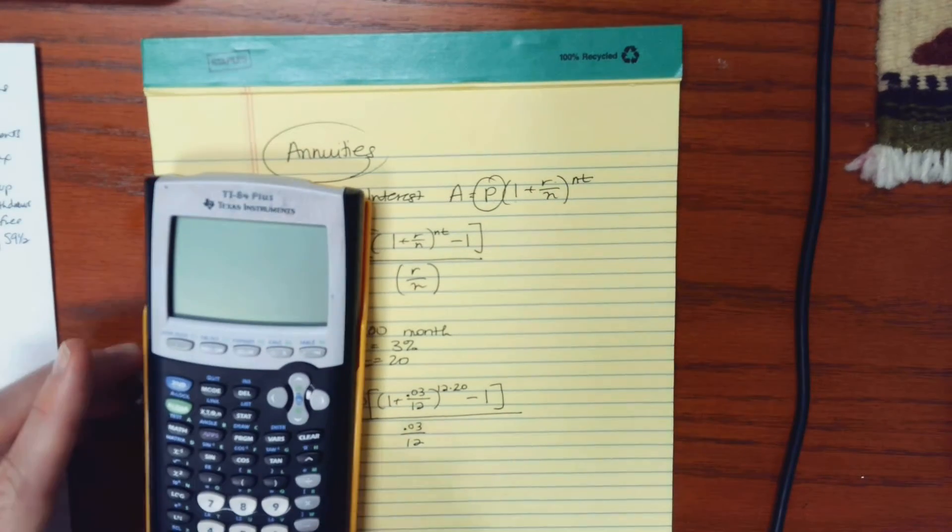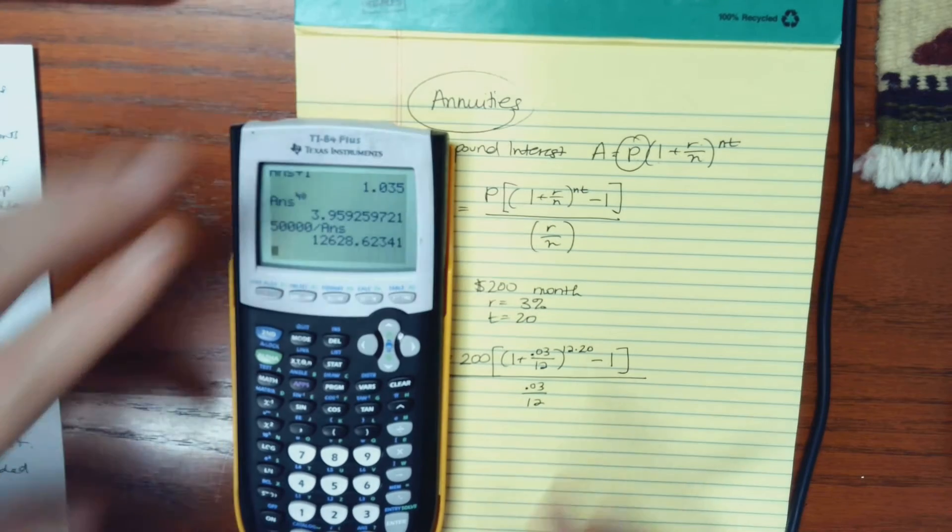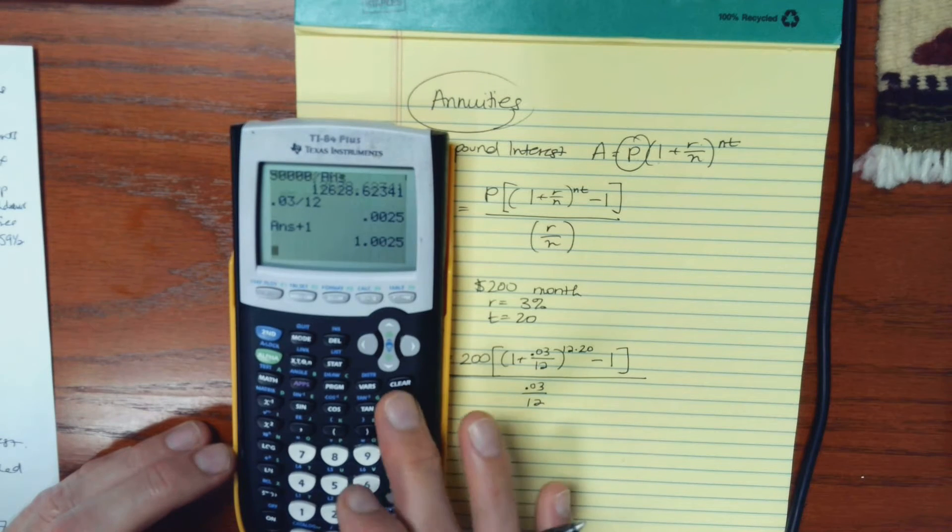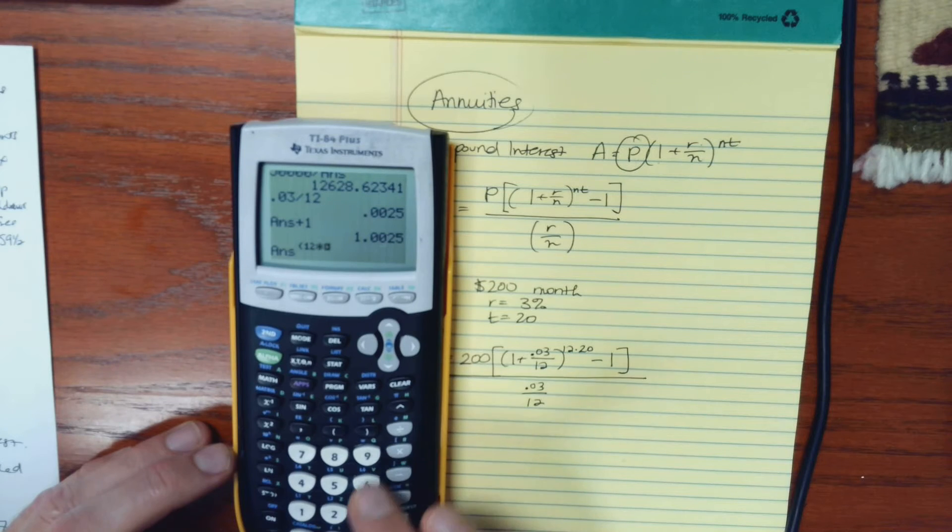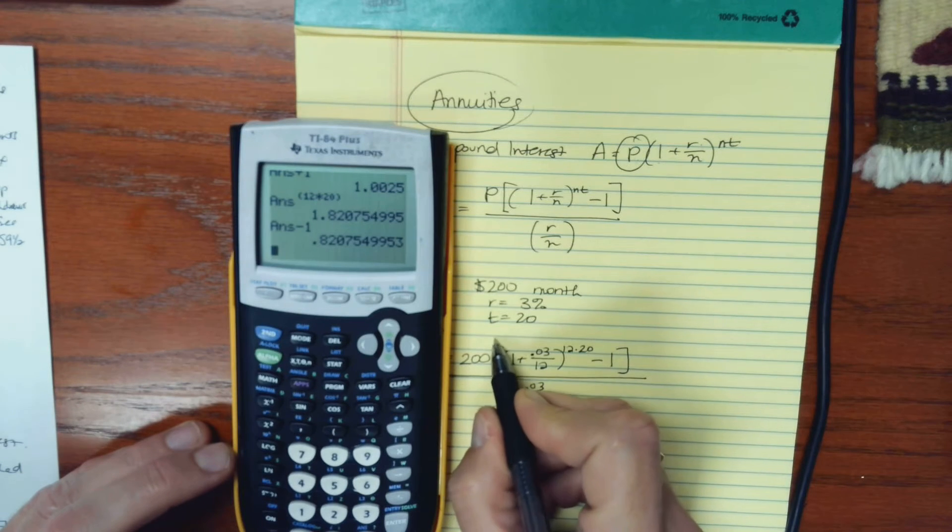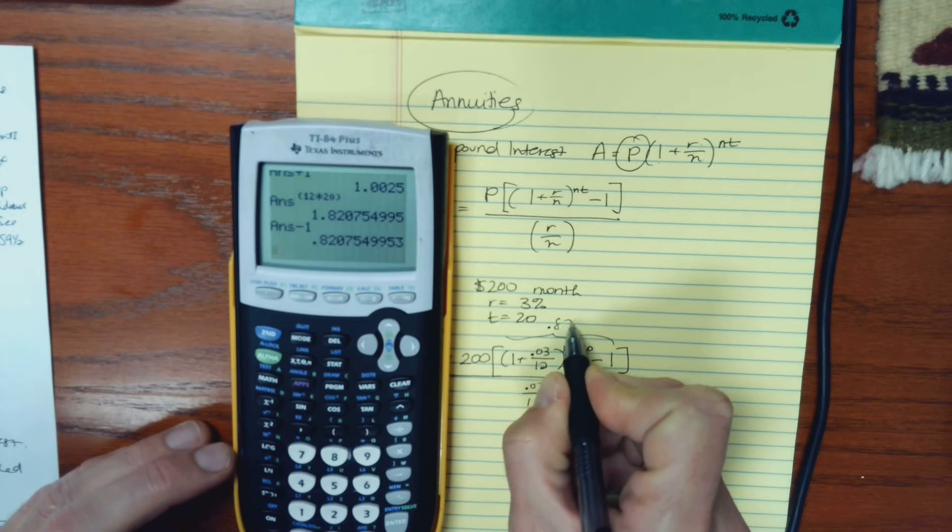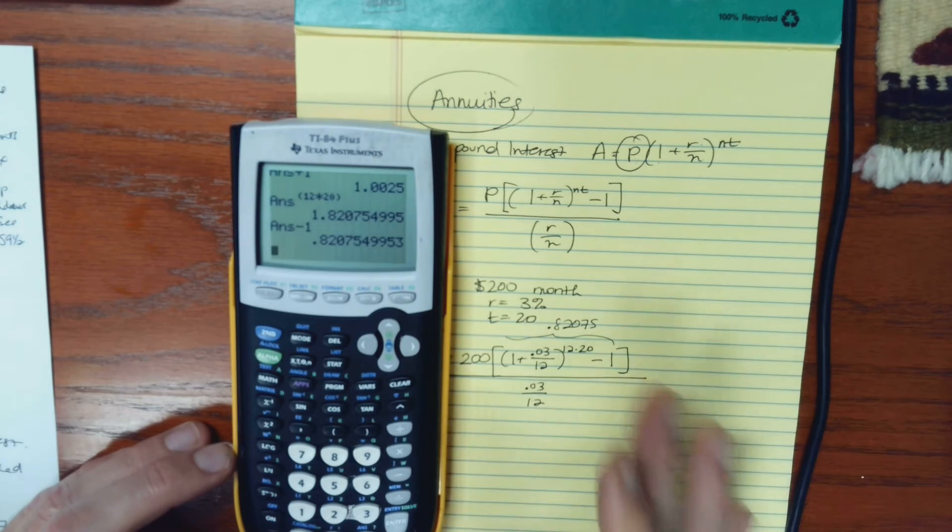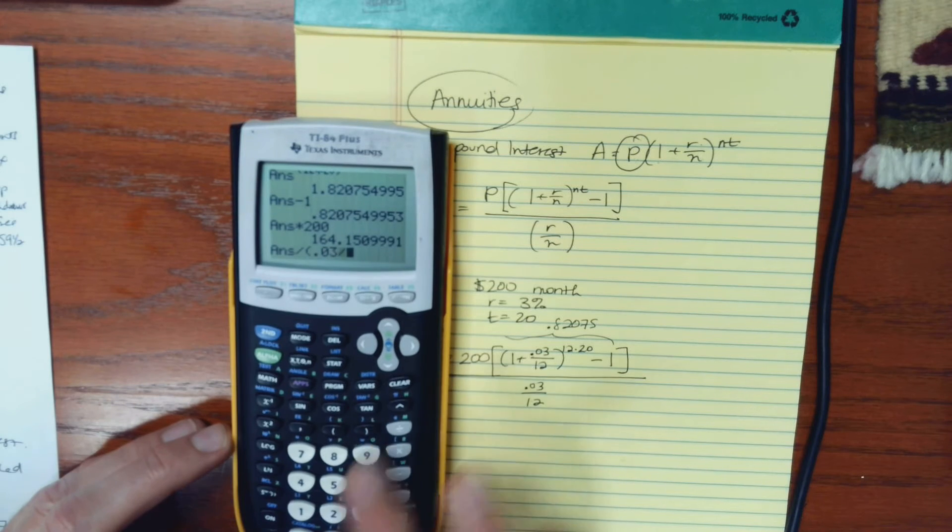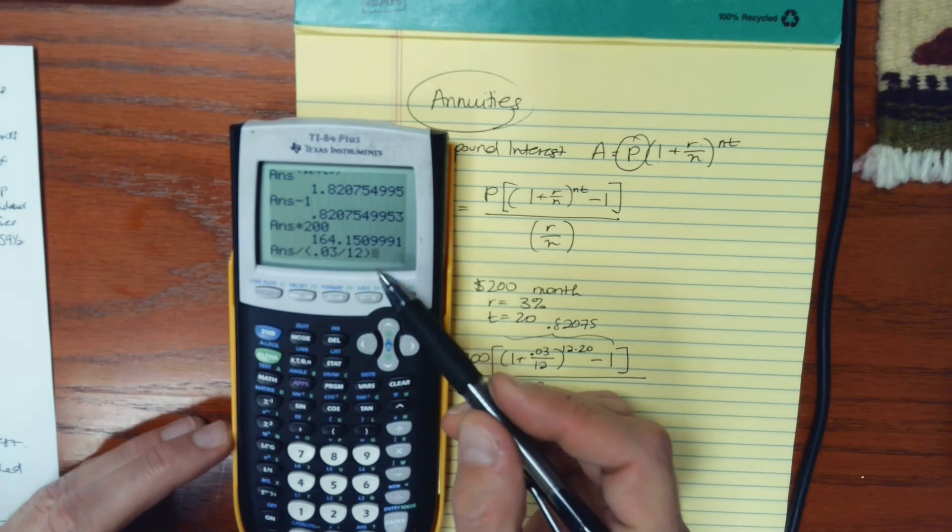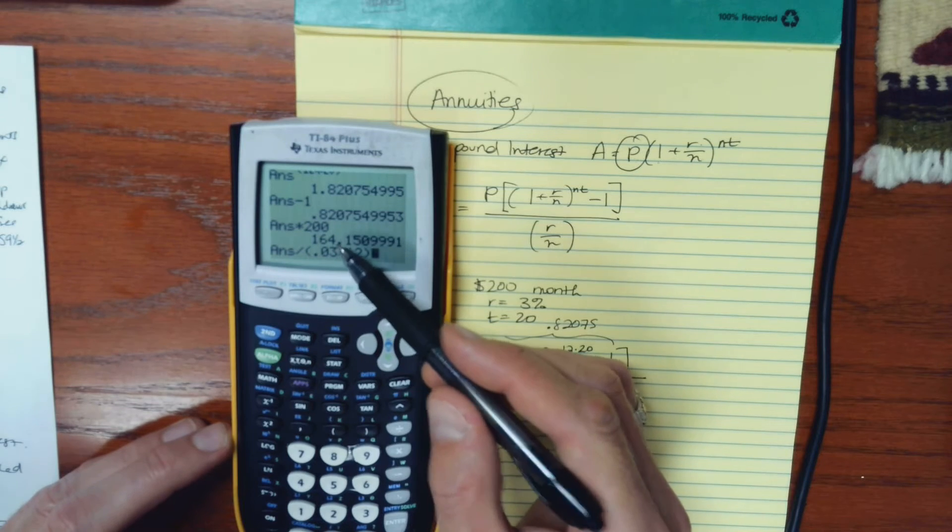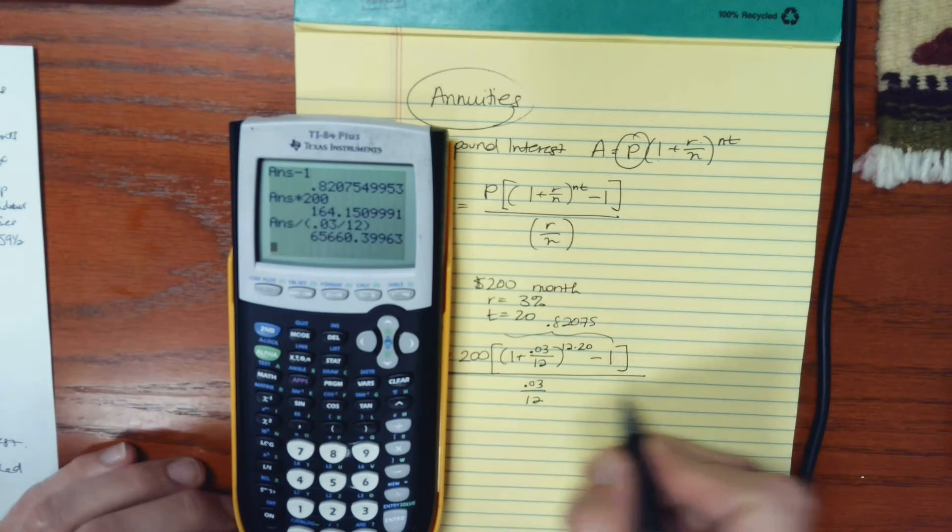So how am I going to do this? I'm going to work from the inside out in my calculator by taking 0.03 and dividing that by 12, adding one, and then raising that to the power of 12 times 20. So then I need to subtract 1. So this piece is 0.82075 and some change. I'm just going to multiply that by 200 and then divide by 0.03 divided by 12. I'm using parentheses to make sure that that division of 0.03 by 12 happens before I take the previous result and divide it.